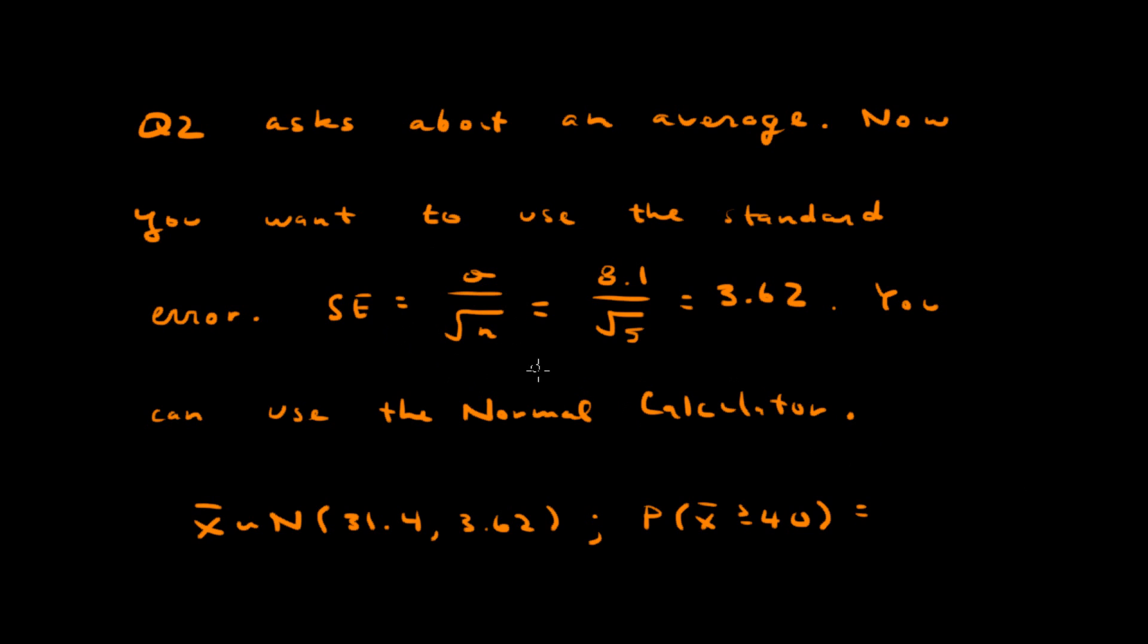To calculate the standard error, you can use this formula: sigma divided by the square root of n, where sigma is the population standard deviation. This is given. n is the sample size. In this problem, we're looking at a sample size of 5. So 8.1 divided by the square root of 5 is 3.62. That's the standard error. So you want to use this value now instead of the standard deviation.